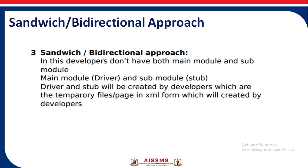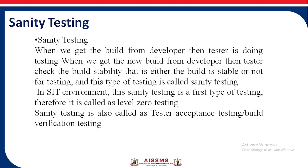In the bi-directional approach, both types of testing are performed by the developer. Next is sanity testing. When we get the build from the developer, the tester checks the stability of the build — whether the build is stable or not for testing — and this type of testing is called sanity testing. In the SIT environment, sanity testing is the first type of testing performed and is also called level 0 testing. Sanity testing is also called tester acceptance testing or build verification testing.